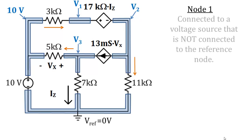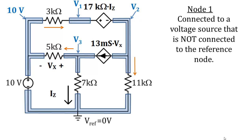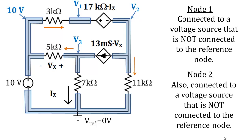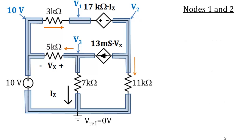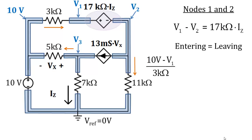The node defined by V1 is connected to a dependent voltage source that is not connected to the reference node, so we cannot write a node voltage nor a direct KCL equation. The same is true for the node identified by V2. If we remember the last example, we can still get two equations from nodes 1 and 2 by looking at them together. First, the difference in electric potential between the nodes must equal the value of the voltage source: V1 minus V2 equals 17 kilohms times IZ. Then we write a node equation for all currents entering or leaving the voltage source. The current through the 3 kilohm resistor enters: 10 volts minus V1 divided by 3 kilohms. The current through the 11 kilohm resistor leaves: V2 minus 0 volts divided by 11 kilohms. The other current that leaves is the dependent current source with a current of 13 millisiemens times Vx.